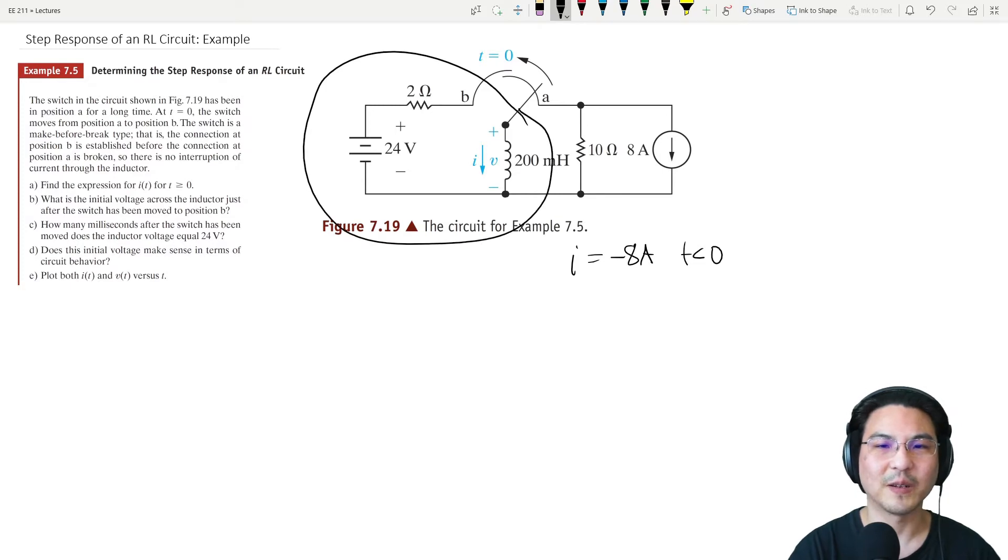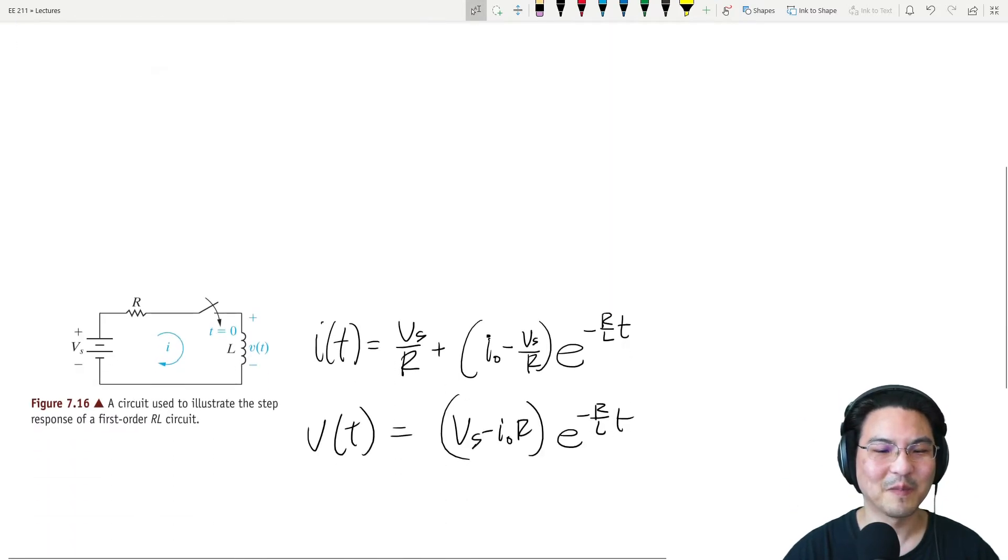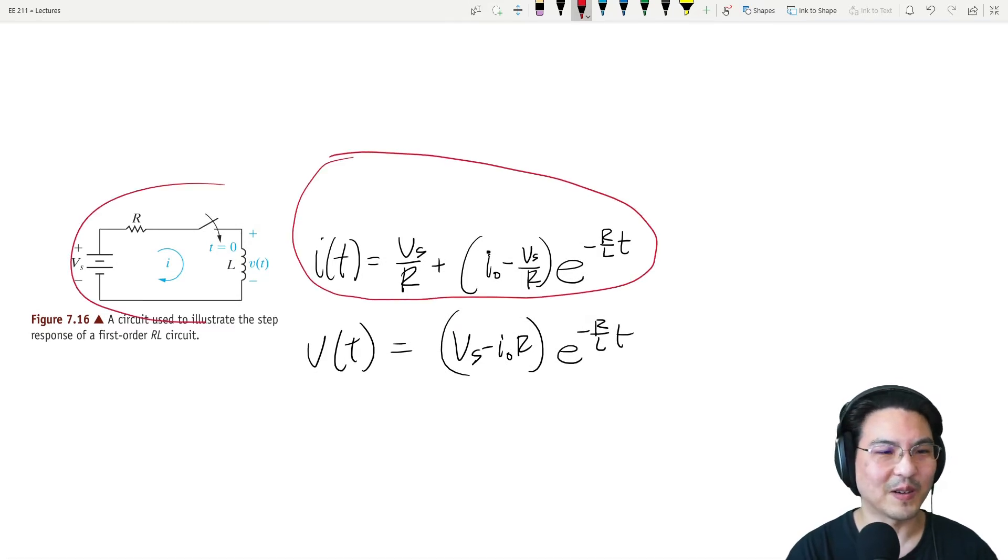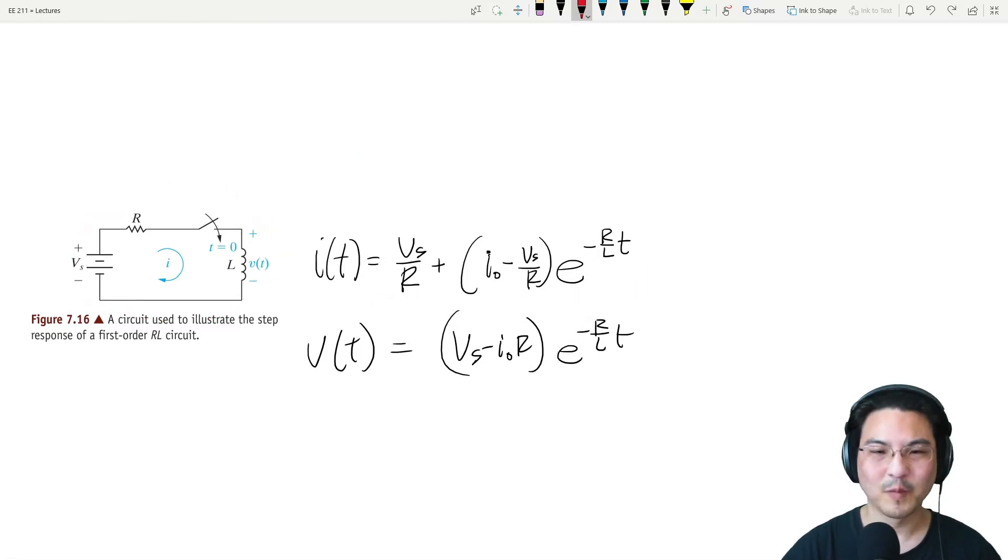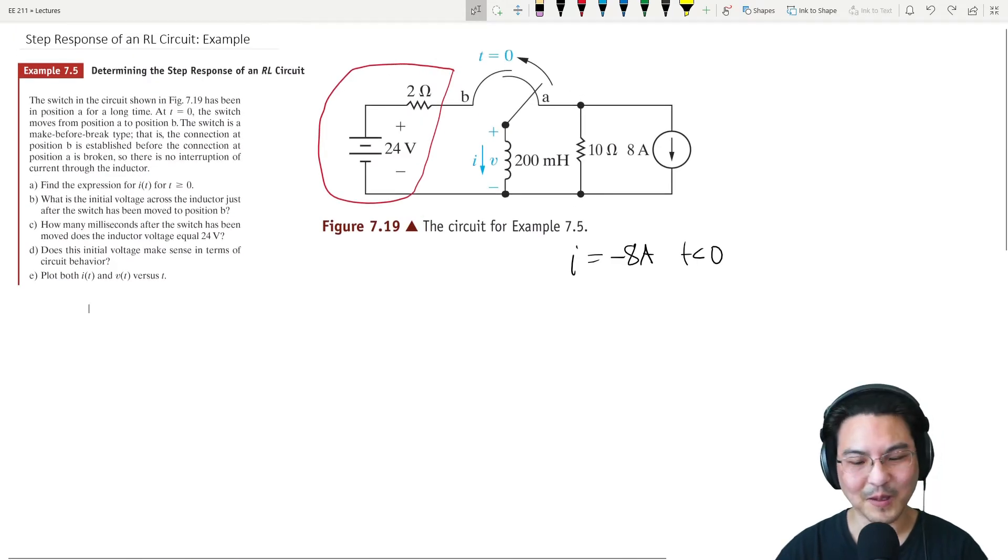If we reduce this to a Thevenin equivalent, which it already is, then we can just use the formula we derived last time, right here, this one. Because look, it already looks exactly like that, so it's fair game. We can just use this, I'll just copy it over where I can see the numbers.